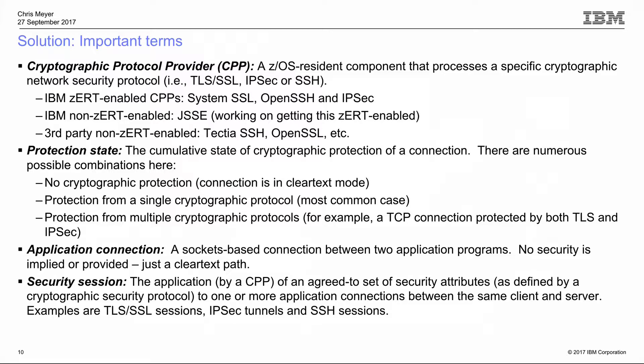A few important terms: A cryptographic protocol provider is a component implementing one of these network security protocols — TLS, SSL, IPsec, or SSH. IBM's ZERT-enabled providers are System SSL, OpenSSH, and IPsec. JSSE is one non-ZERT-enabled IBM provider; we're working to enable it but aren't there yet. There could also be third-party providers — for example, OpenSSL ported for Unix applications, or Tectia's SSH implementation — where traffic is protected by code that isn't IBM's.